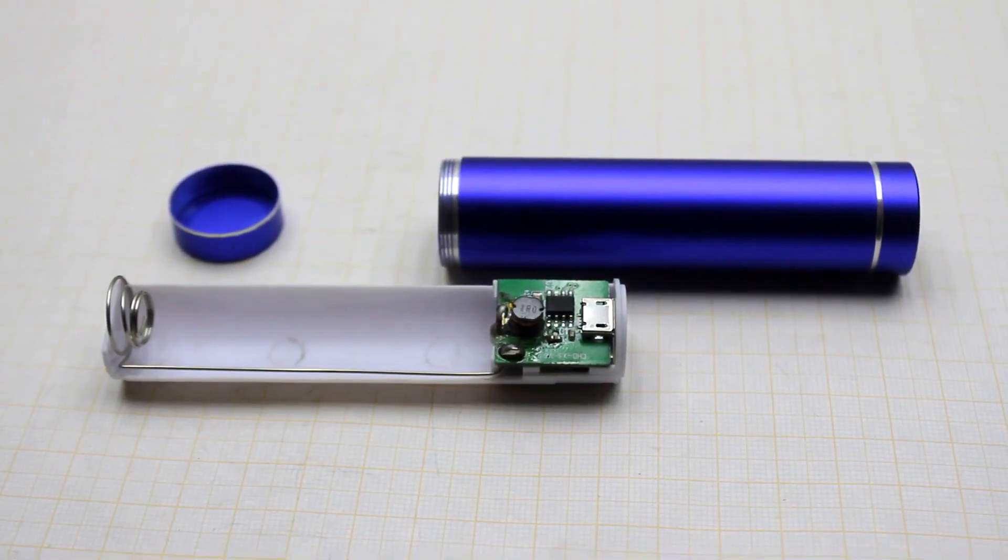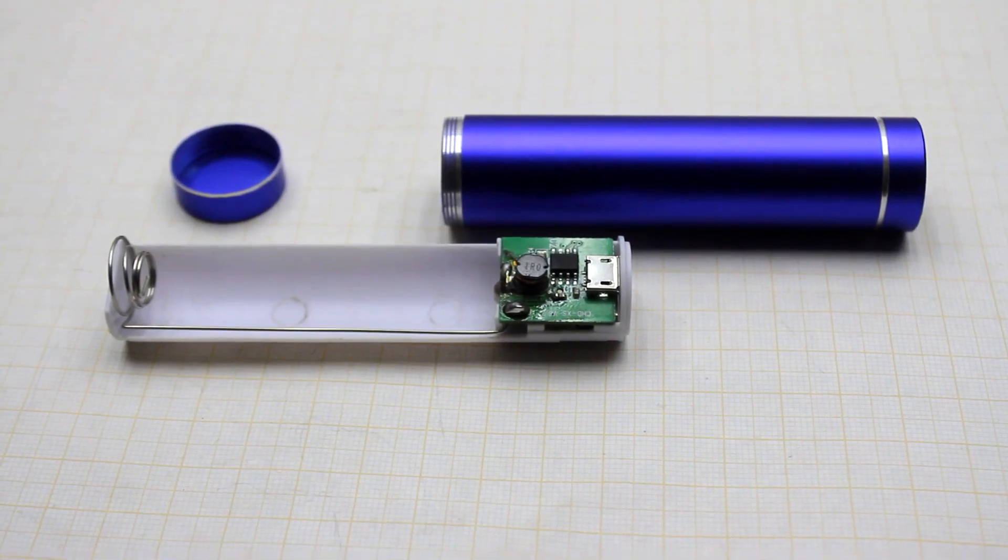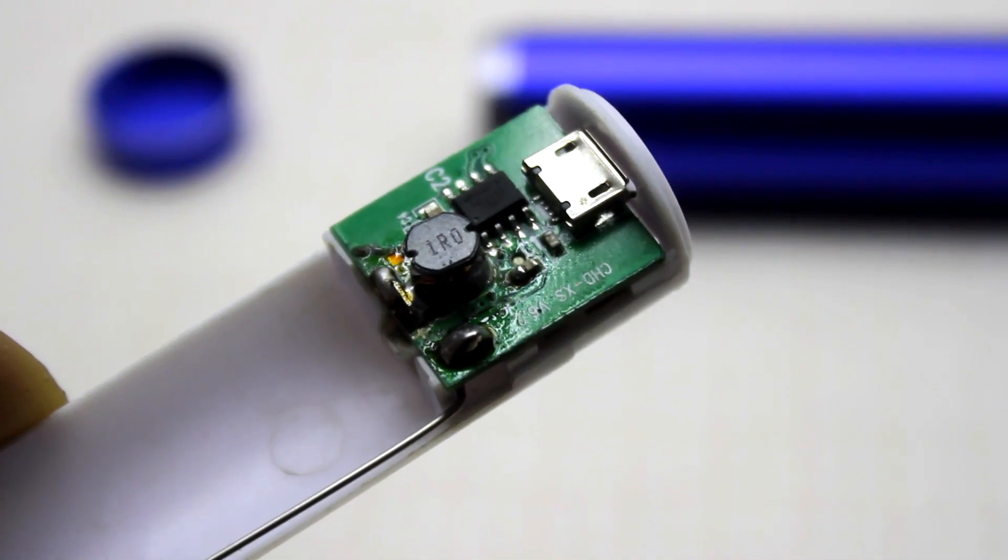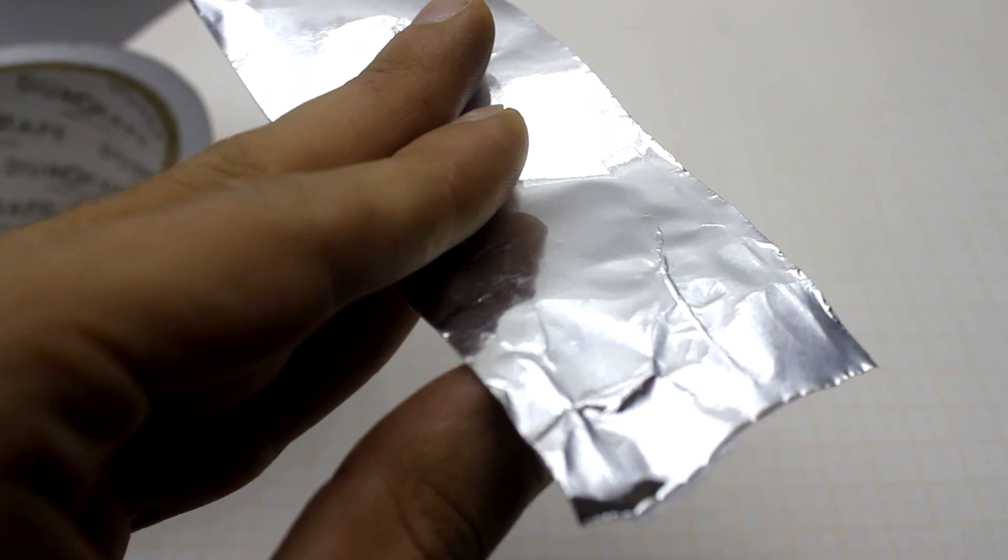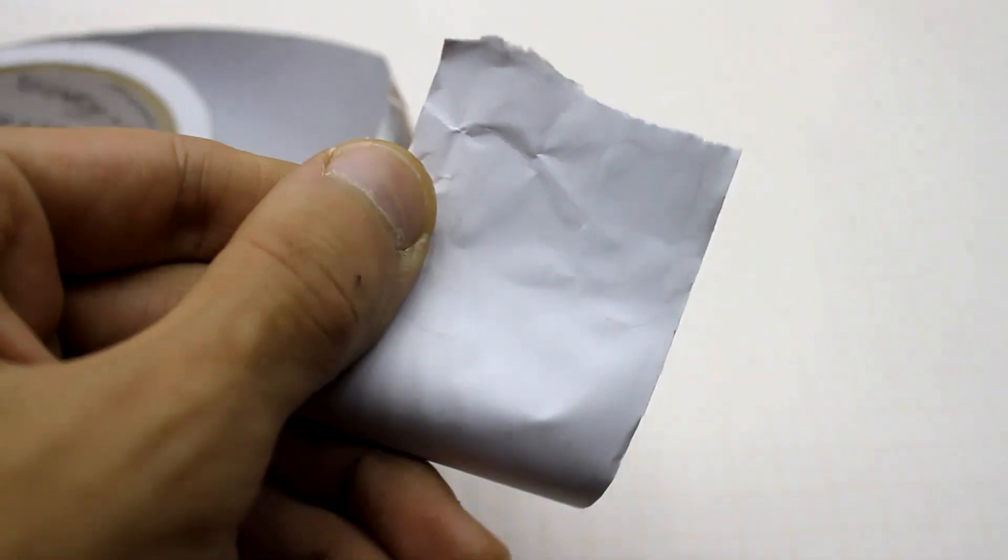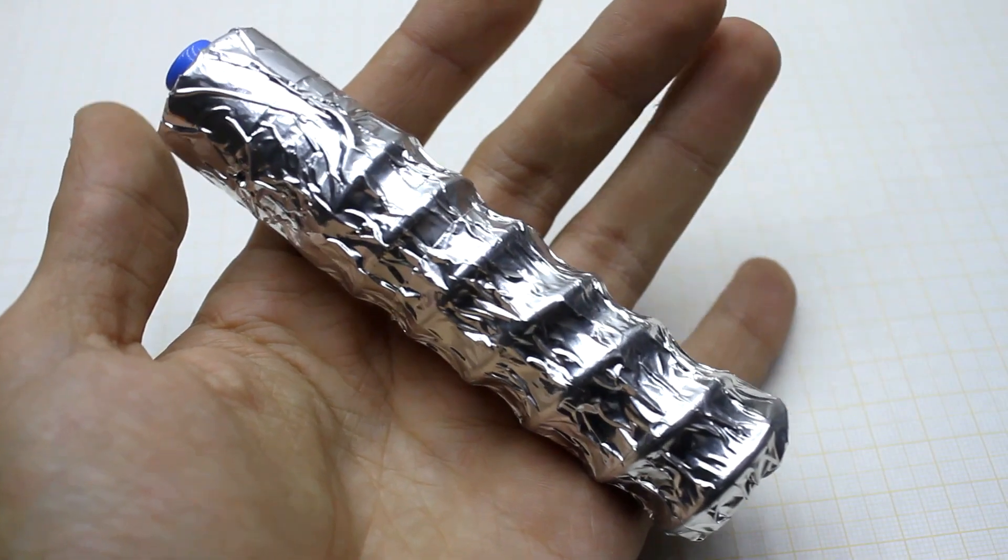By the way, it was possible not to remove the board of the power bank and if necessary, to recharge the phone, but I don't need that. Eventually, I wrapped the heater with an aluminum self-adhesive film. Now the heat is transferred more evenly.